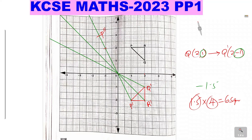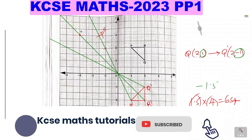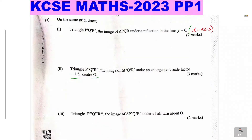For P'', you count six squares from the center of enlargement along that straight line. For R'', follow that straight line from the center, count six squares: 1, 2, 3, 4, 5, 6 — that gives R''. For Q'', follow that straight line from the center, count six squares: 1, 2, 3, 4, 5, 6 — that is Q''. Then join the points to form triangle P''Q''R''.